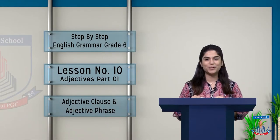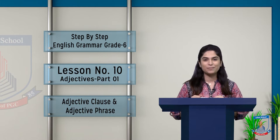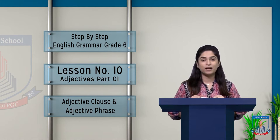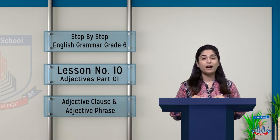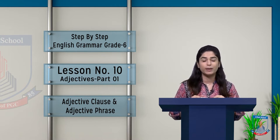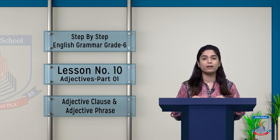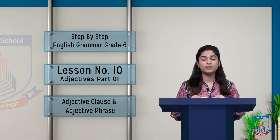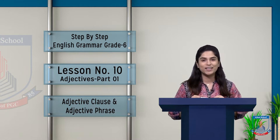Assalamu alaikum grade 6. How are you all? My name is Vrda Khalid and I'm your English teacher. As you all know, we have completed Unit 5 of Oxford Progressive English. Today we are going to talk about step-by-step English grammar — a very nice topic of grammar. I have written all the information on the board. So let's start our lesson today.